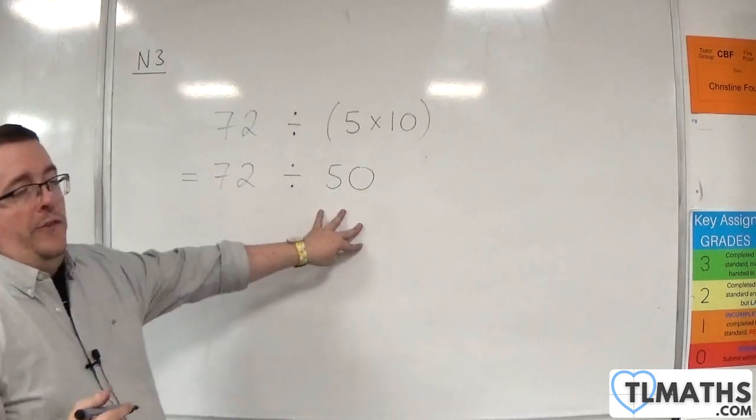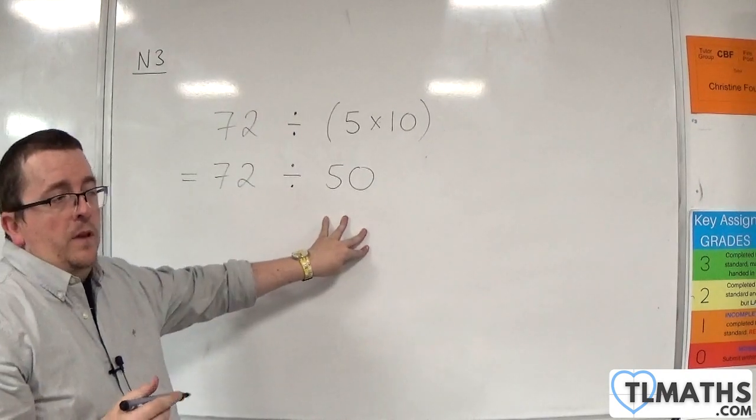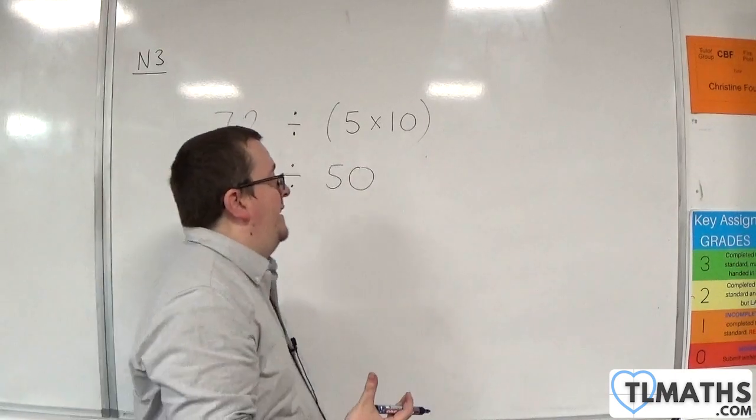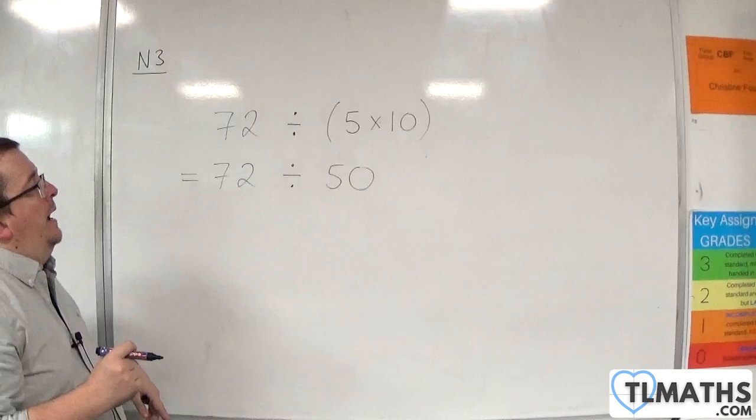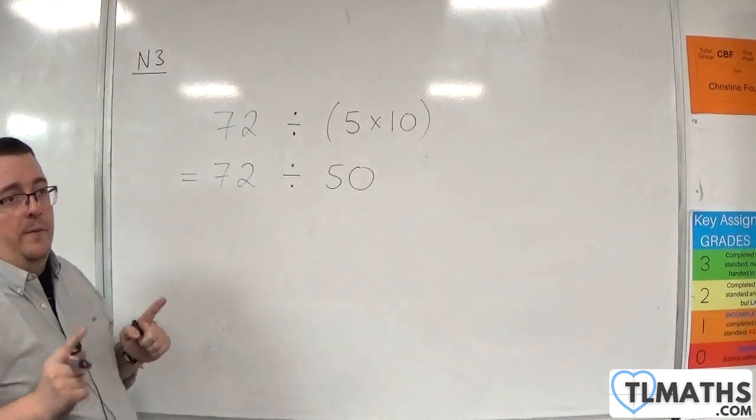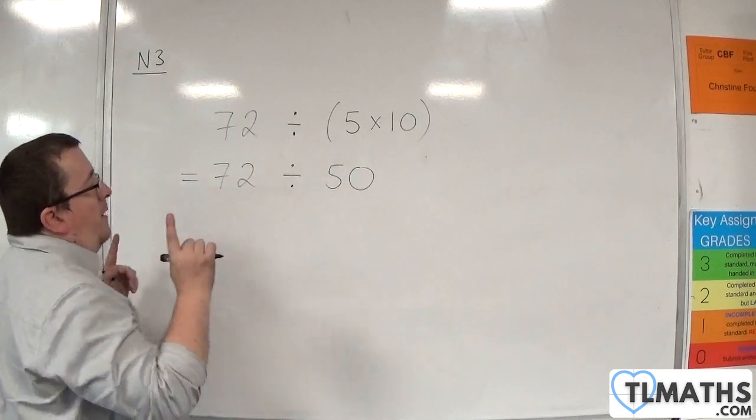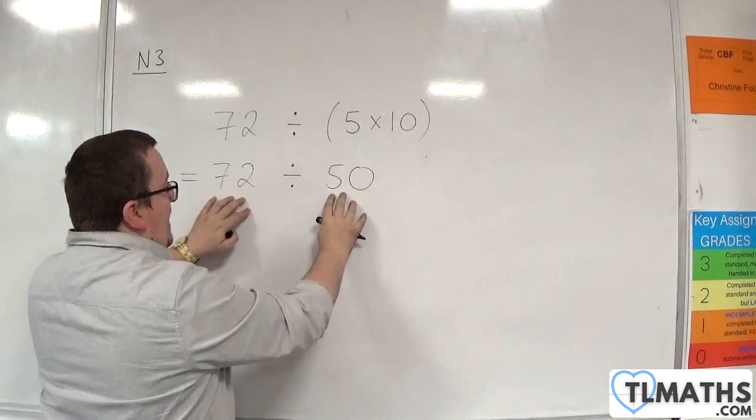Now, in order to work out 72 divided by 50, I'm going to use short division. So, our division technique. However, the first thing I'm going to point out is that I can make this a little bit easier for myself by dividing both of them by 10.